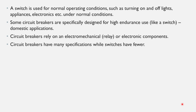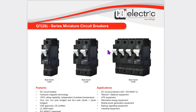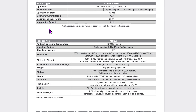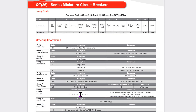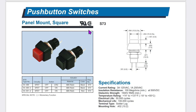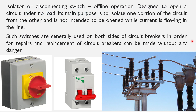Circuit breakers require mechanical, electromechanical, and electronic components. Circuit breakers have many specifications while switches have fewer. Looking at the specifications of these domestic circuit breakers, you can see the list is exhaustive. In comparison, a switch has far fewer specifications.